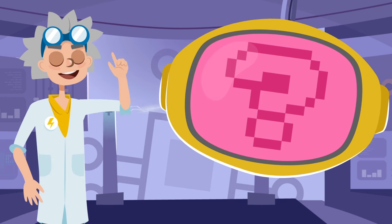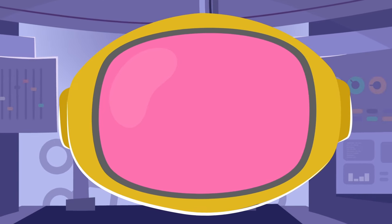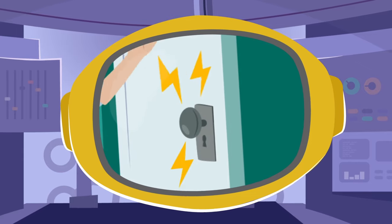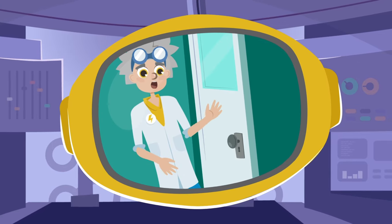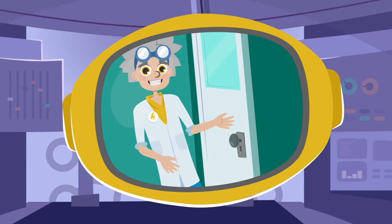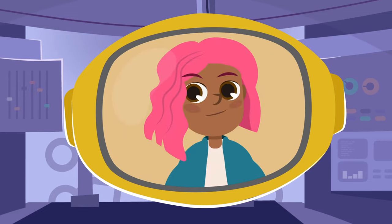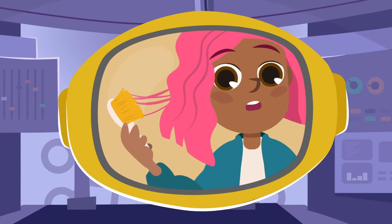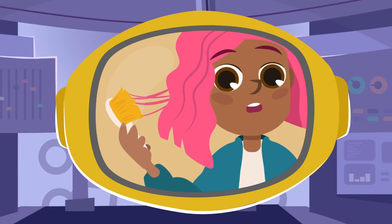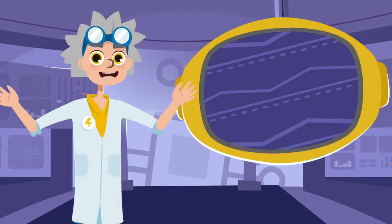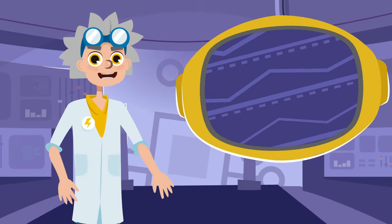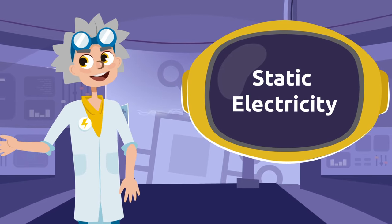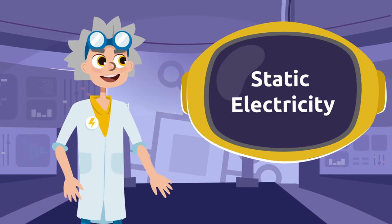Let's start with a couple of questions. Have you ever walked across a carpet and later felt a small shock when you touched an object? Yes! And have you ever brushed your hair for a while and noticed how it got stuck to your brush? Yes! Well, this happens because of static electricity — meaning that an electric charge is created when objects rub against each other.